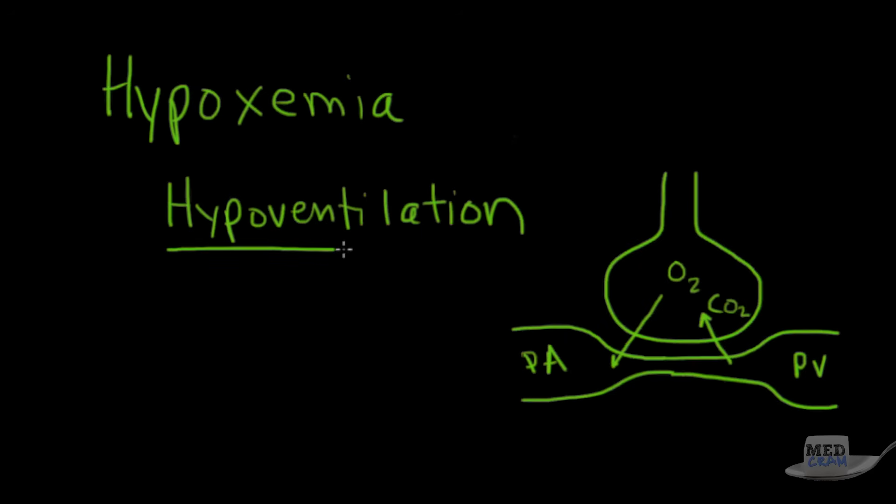So how is hypoventilation going to cause hypoxemia? Well hypoventilation is simply when the lung or the respiratory rate or the tidal volume goes down so that the amount of ventilation that's occurring, the amount of air that's going in and out of the lung, is decreased.